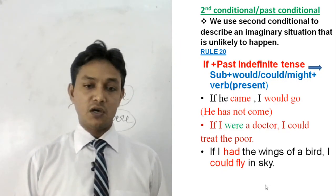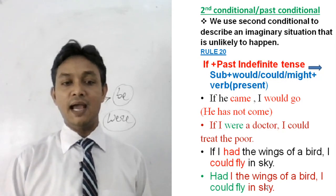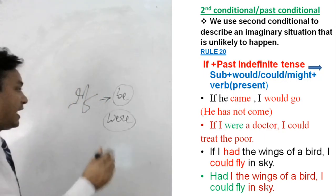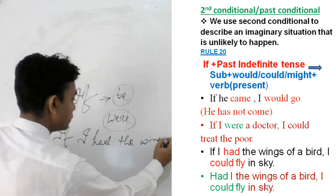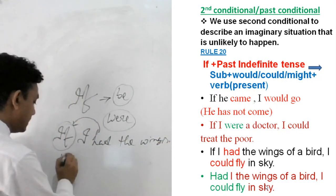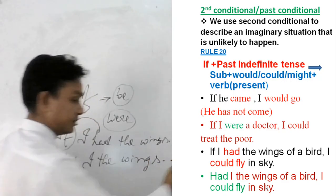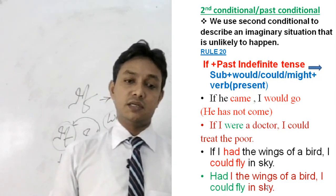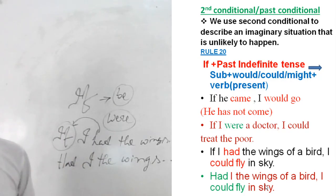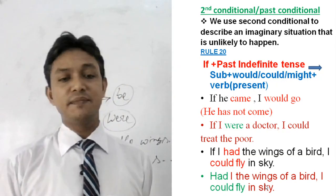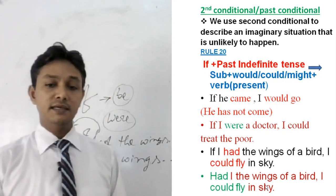An important point about second conditional: sometimes we can replace the word 'if' with the word 'had'. For example, 'If I had the wings of a bird' becomes 'Had I the wings of a bird.' The word 'if' is replaced by bringing 'had' to the beginning of the sentence, and the meaning and structure of the next part remain the same. So the sentence becomes: 'Had I the wings of a bird, I could fly in the sky.'